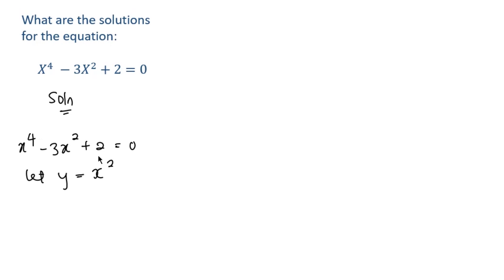In that case, x to the power of 4 will become y squared, because since y equals x squared, then x to the power of 4 is y squared. Then minus 3y, because y is the same thing as x squared, plus 2 equals 0.